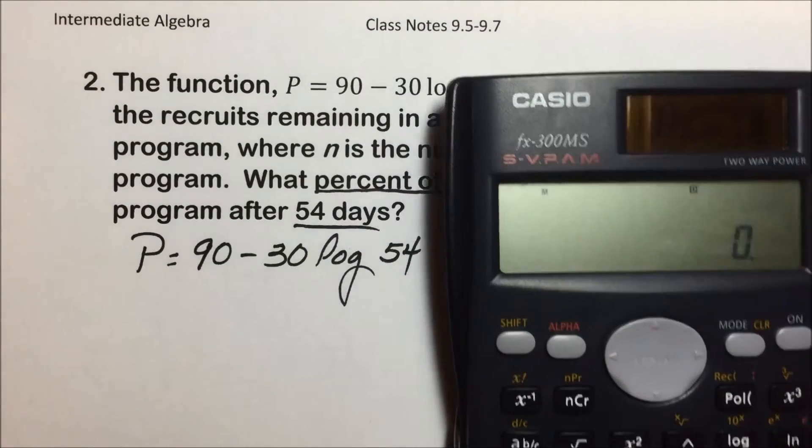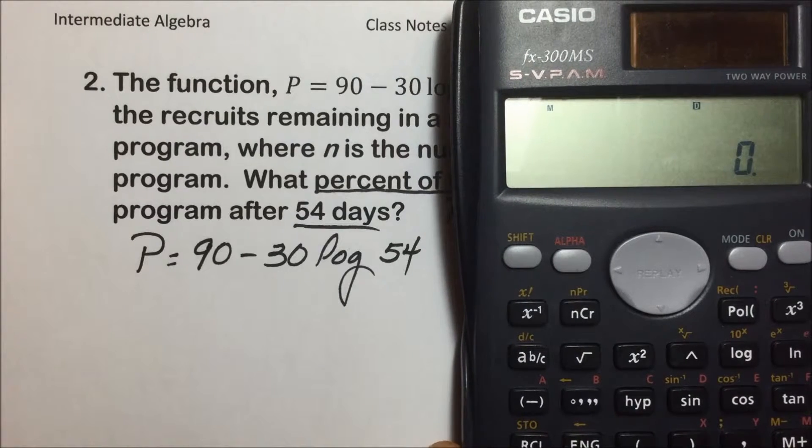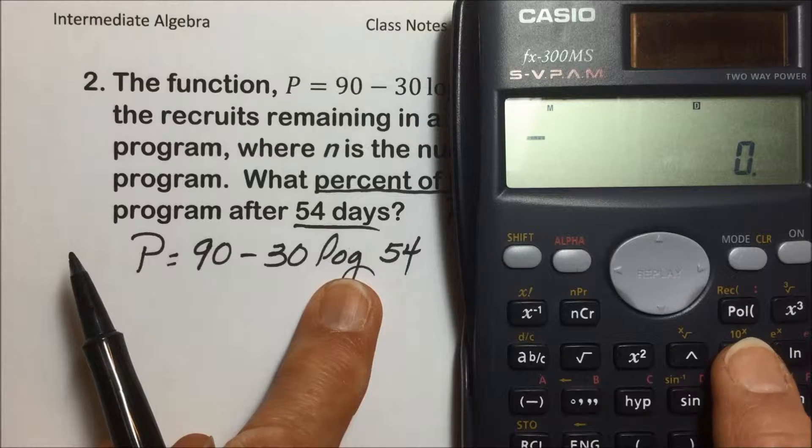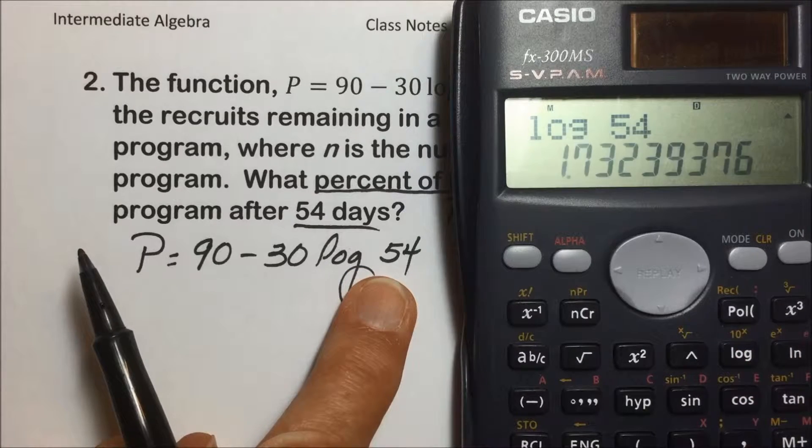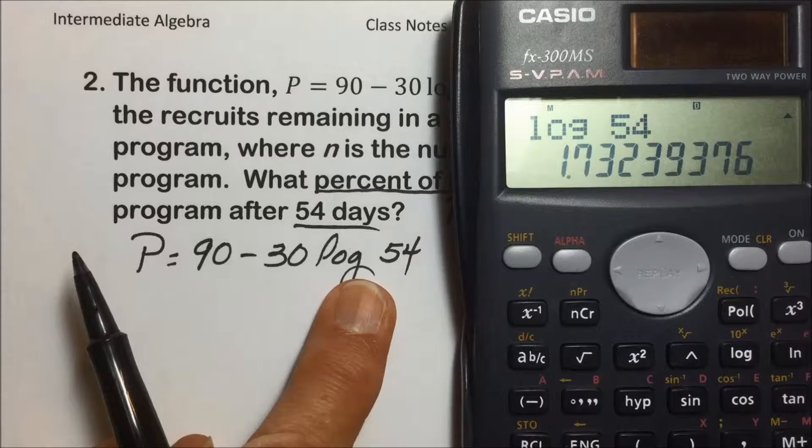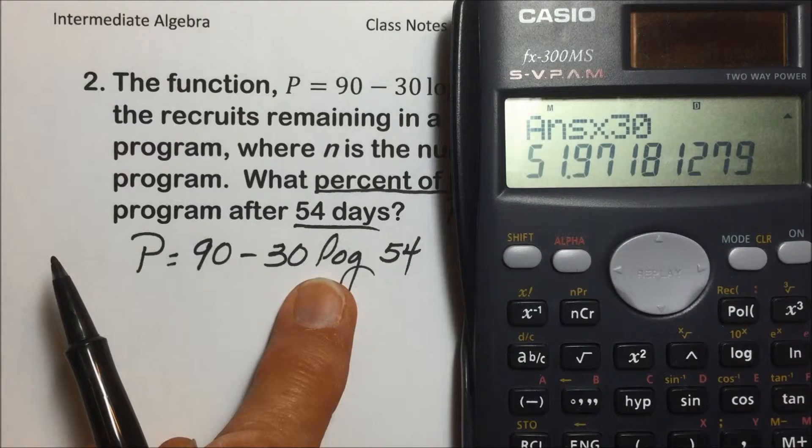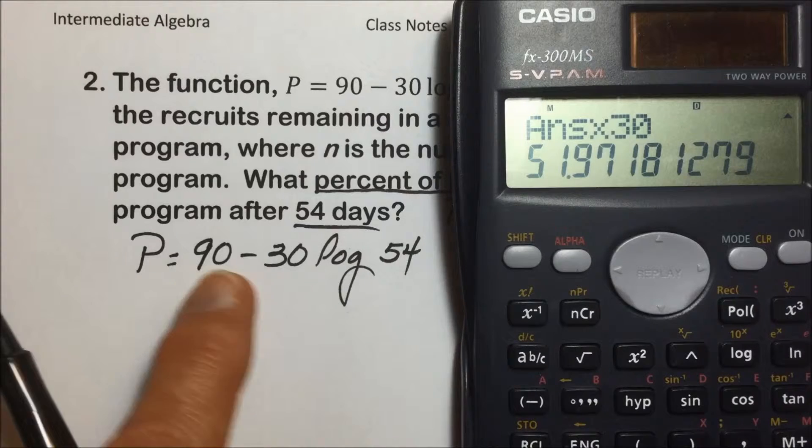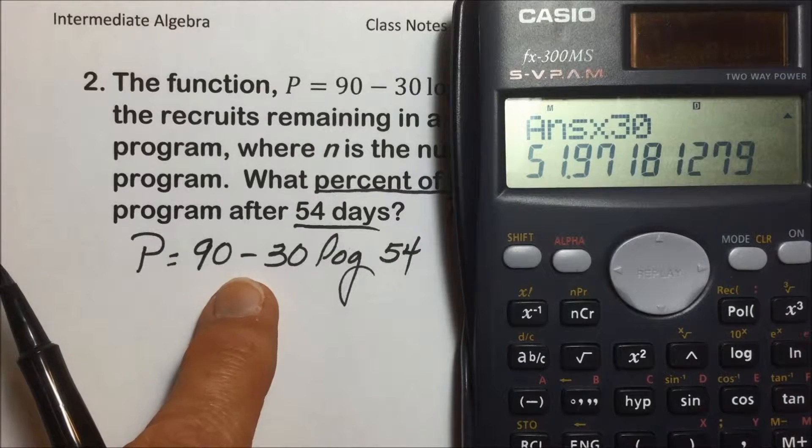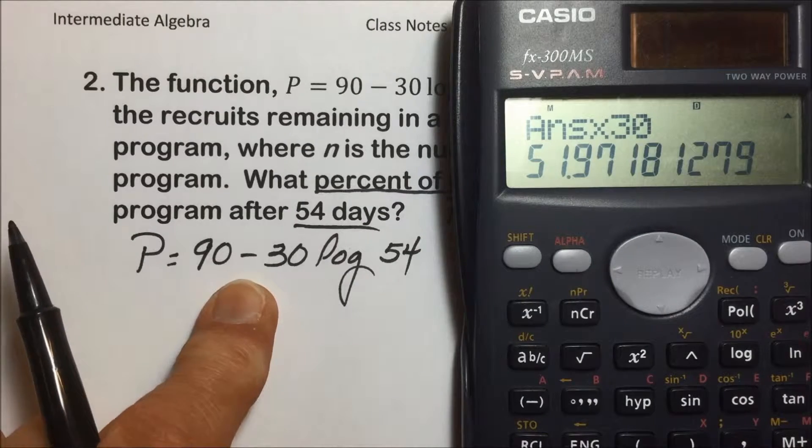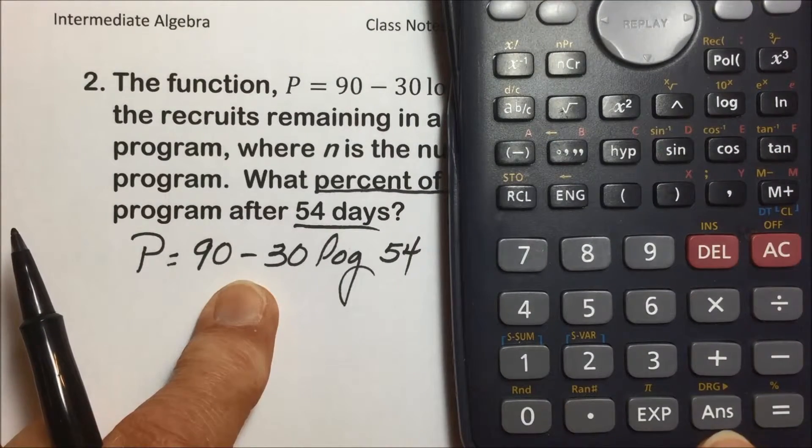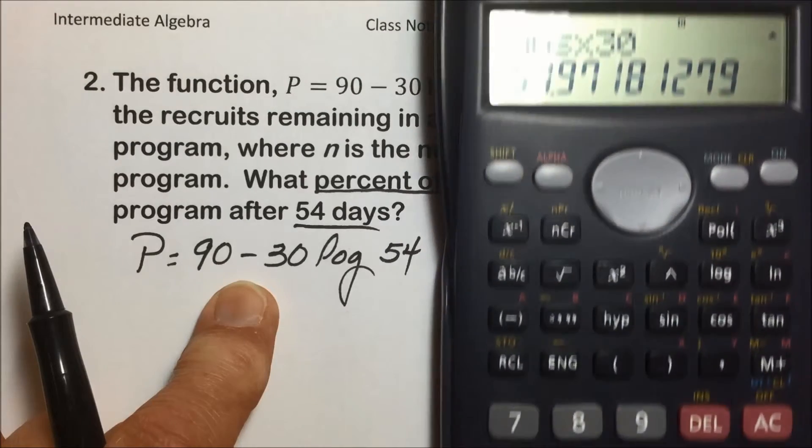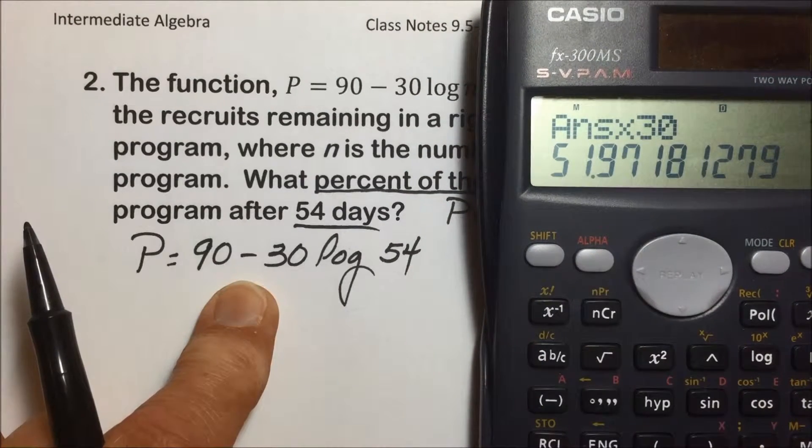Using a scientific calculator to simplify this particular example, again following order of operations, but using the common logarithm, the common logarithm of 54 gives us the following value. Multiplying that by 30 results in 51.97. We could change the sign and then subtract it from 90, or add it to 90 by changing the sign. Or in this particular model calculator, in the bottom row we have an answer key, and the answer, when we tap that button, brings up the answer to the previous calculation, which in this case is the 51.97.